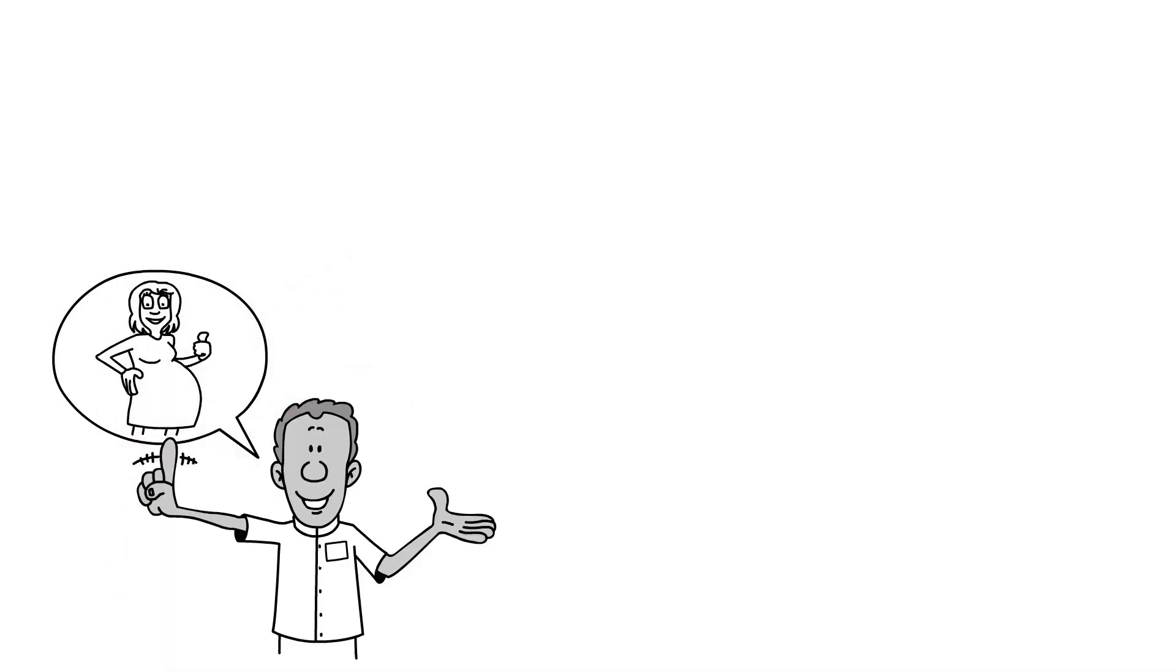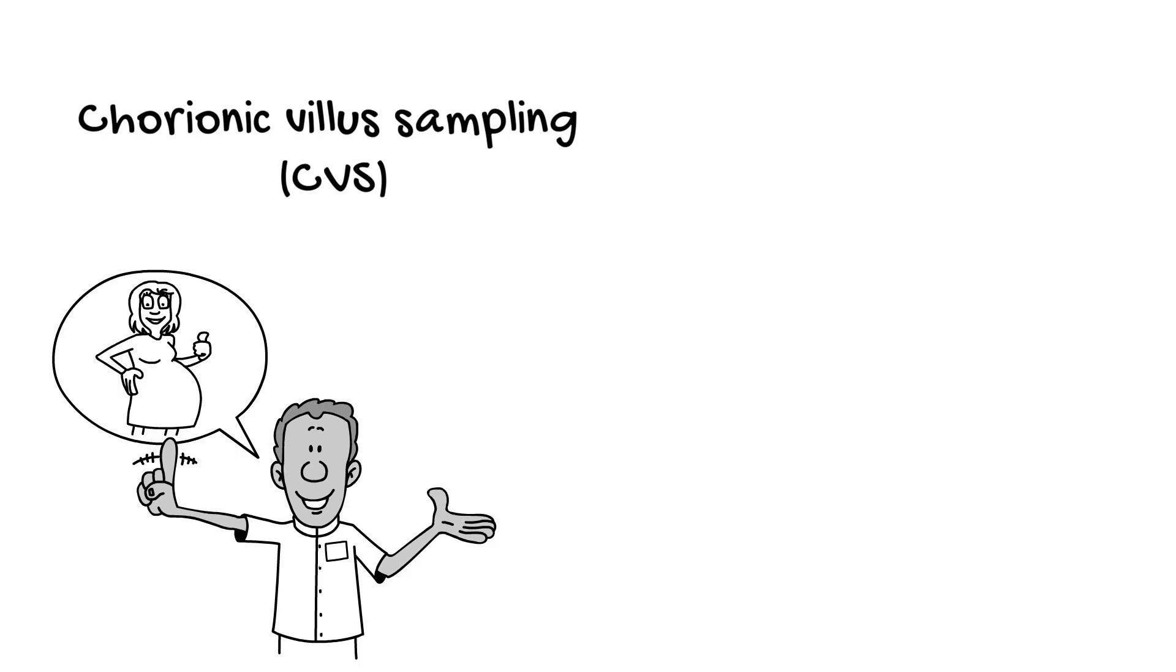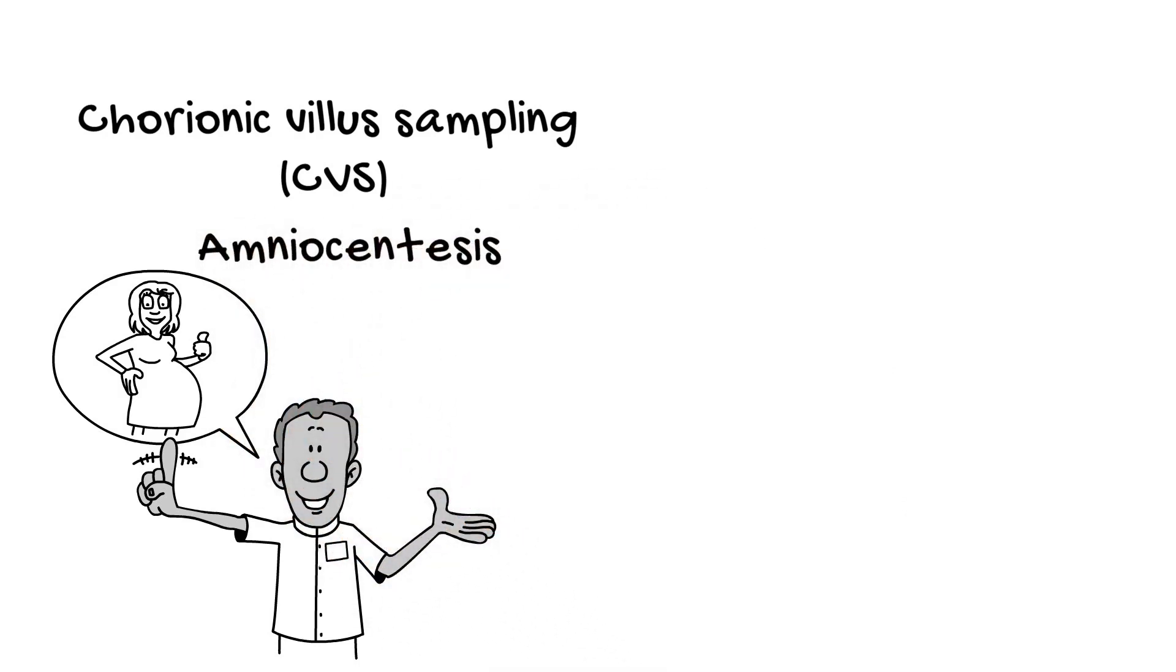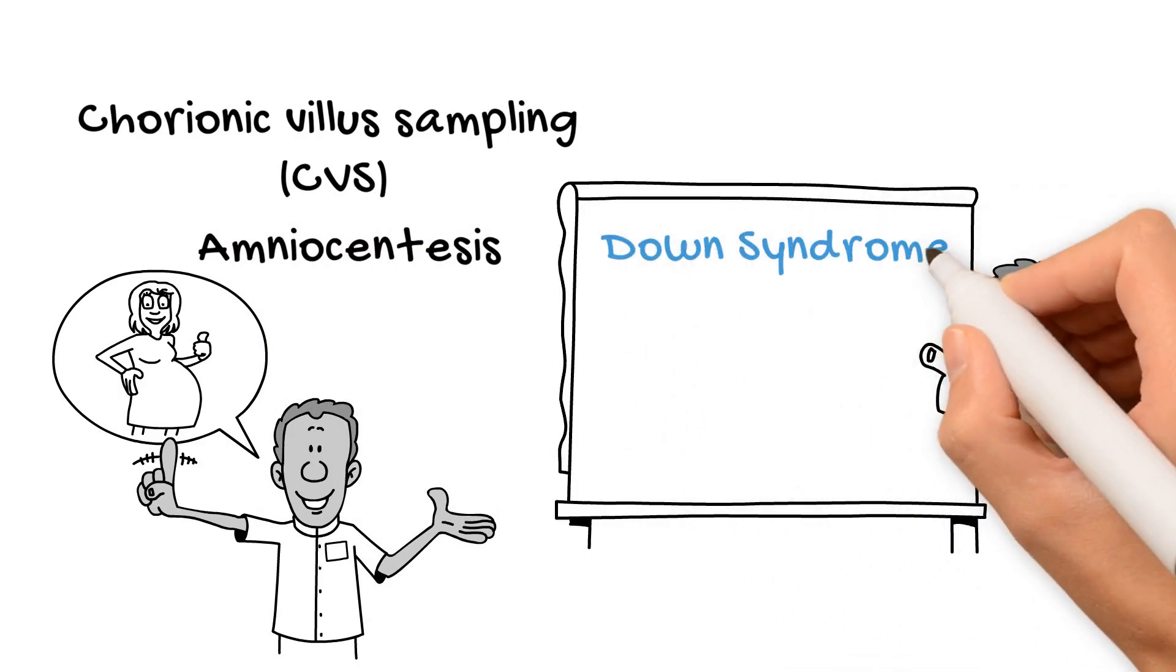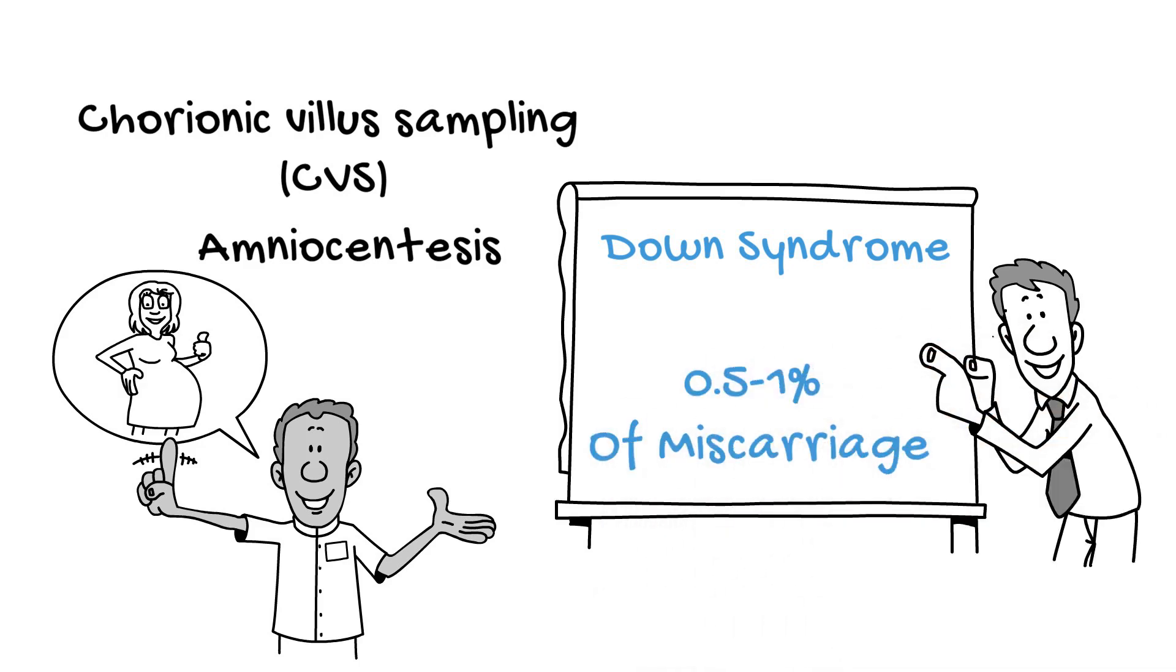There are also diagnostic tests which you should be aware of, such as chorionic villus sampling, CVS, and amniocentesis, which can give you a definite yes or no answer regarding certain anomalies, including Down syndrome. However, these procedures are invasive, and there is a small chance of 0.5 to 1% of miscarriage.